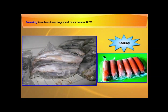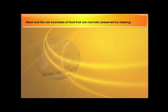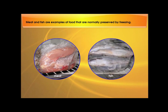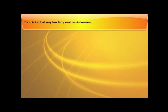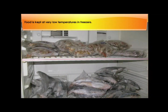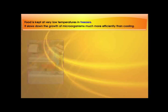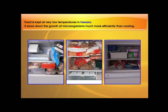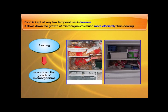Freezing involves keeping food at or below zero degrees. Meat and fish are examples of food that are normally preserved by freezing. Food is kept at very low temperatures in freezers. It slows down the growth of microorganisms much more efficiently than cooling.